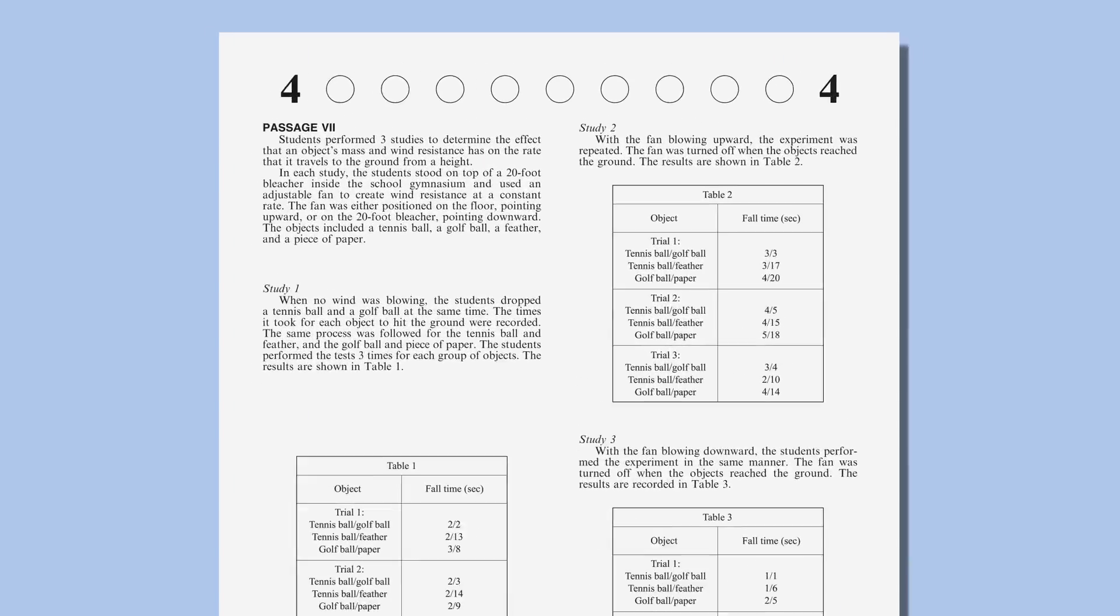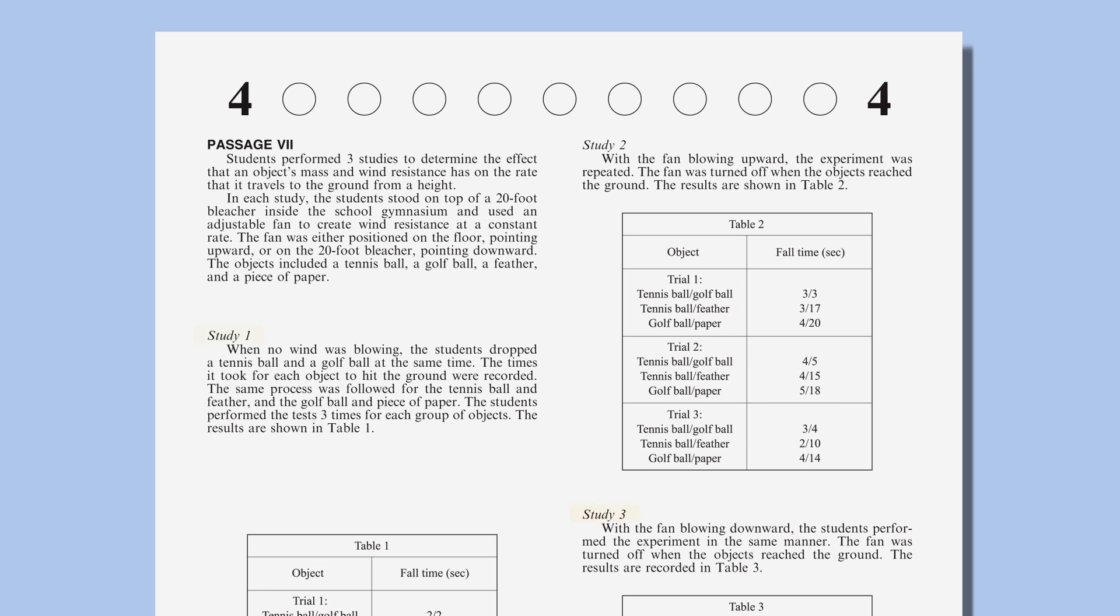Now let's look at a research summary passage. You'll recognize these passages because they feature experimental findings. You'll want to skim at least the first few lines of each experiment and look for details about how they're different.